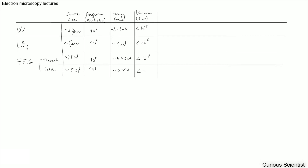We can also talk about the vacuum requirements, defined in torr. For tungsten it should be smaller than 10⁻⁵. For lanthanum hexaboride it should be even smaller — 10⁻⁶. The thermal field emission requires 10⁻⁸ and the cold field emission requires 10⁻¹⁰, which is very very high vacuum.